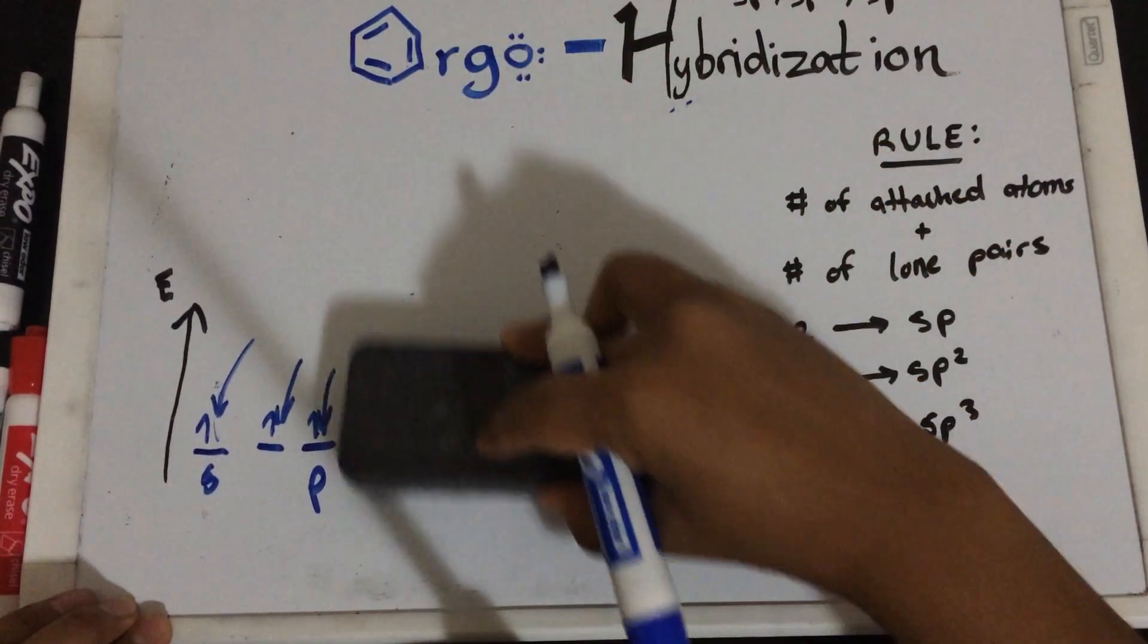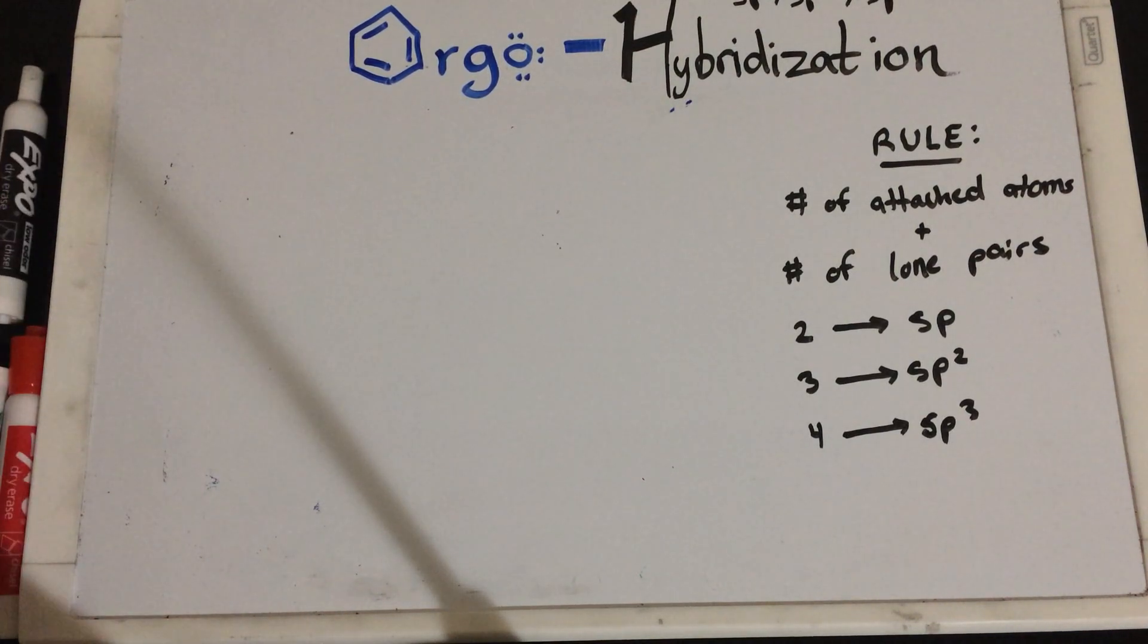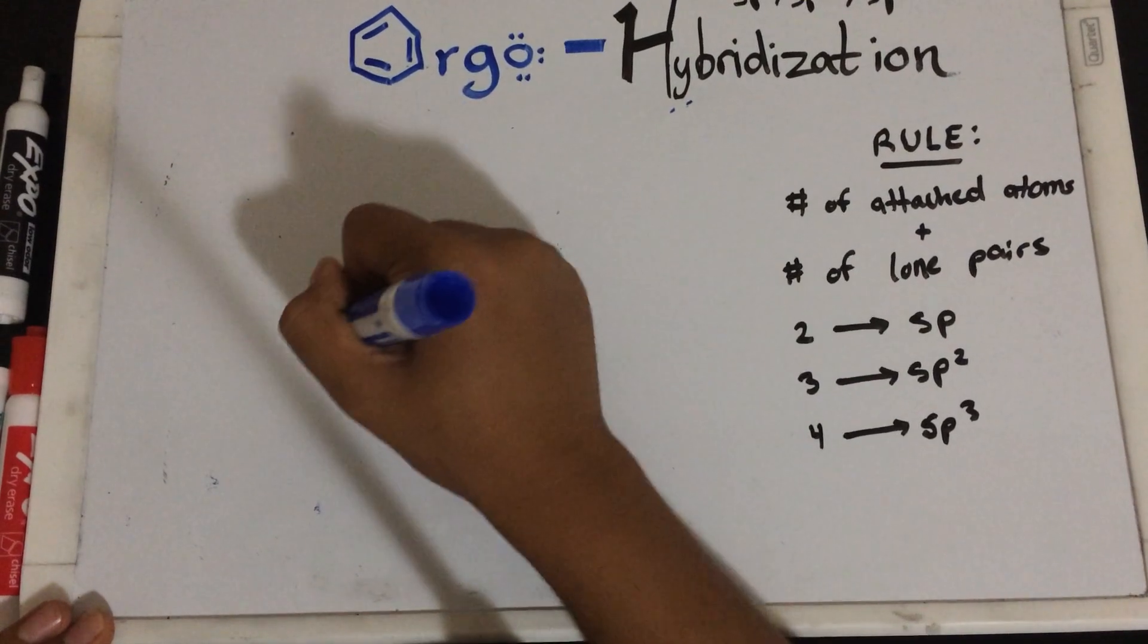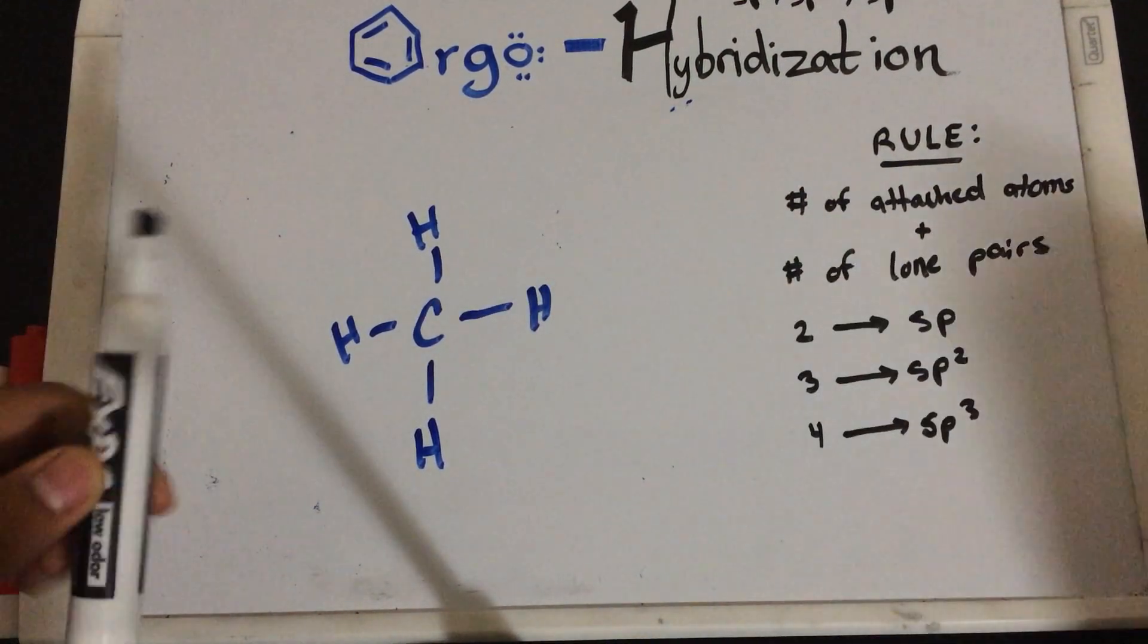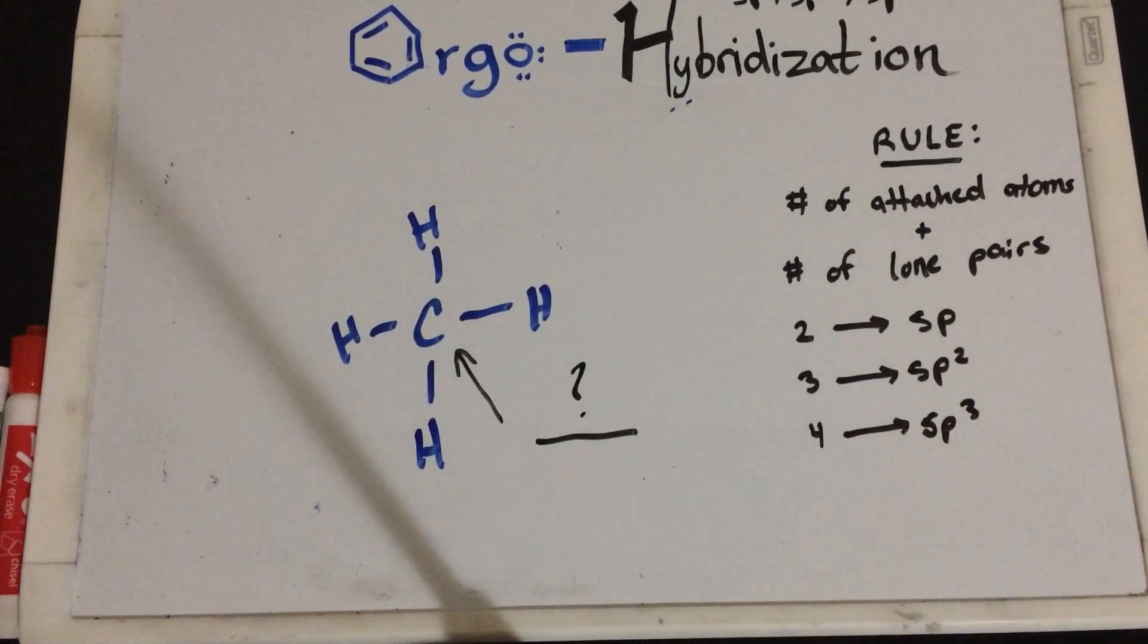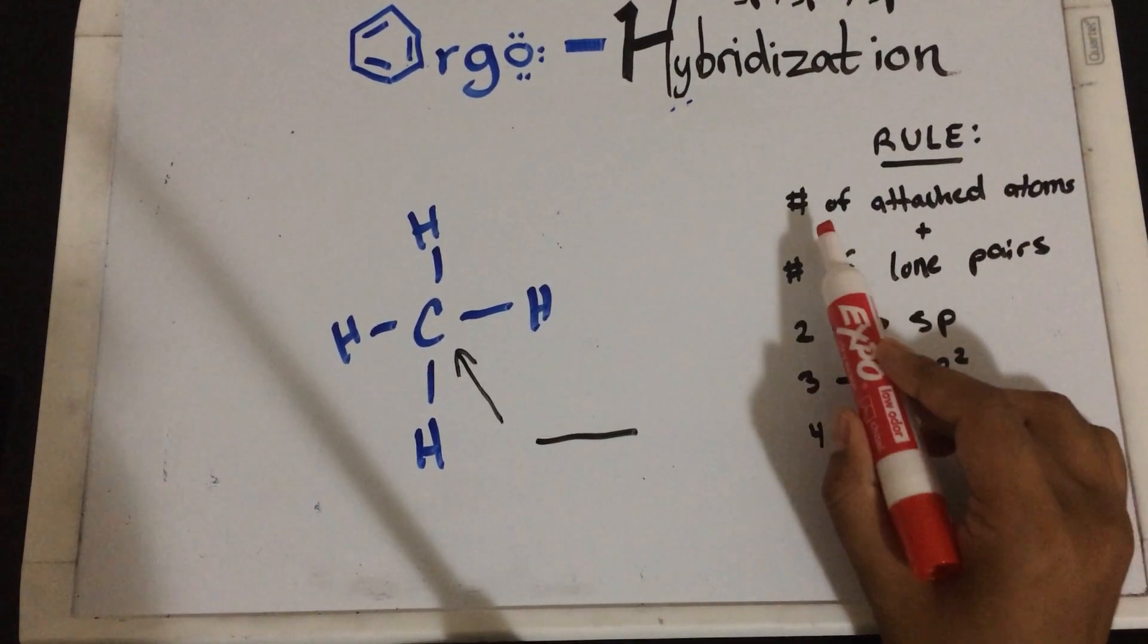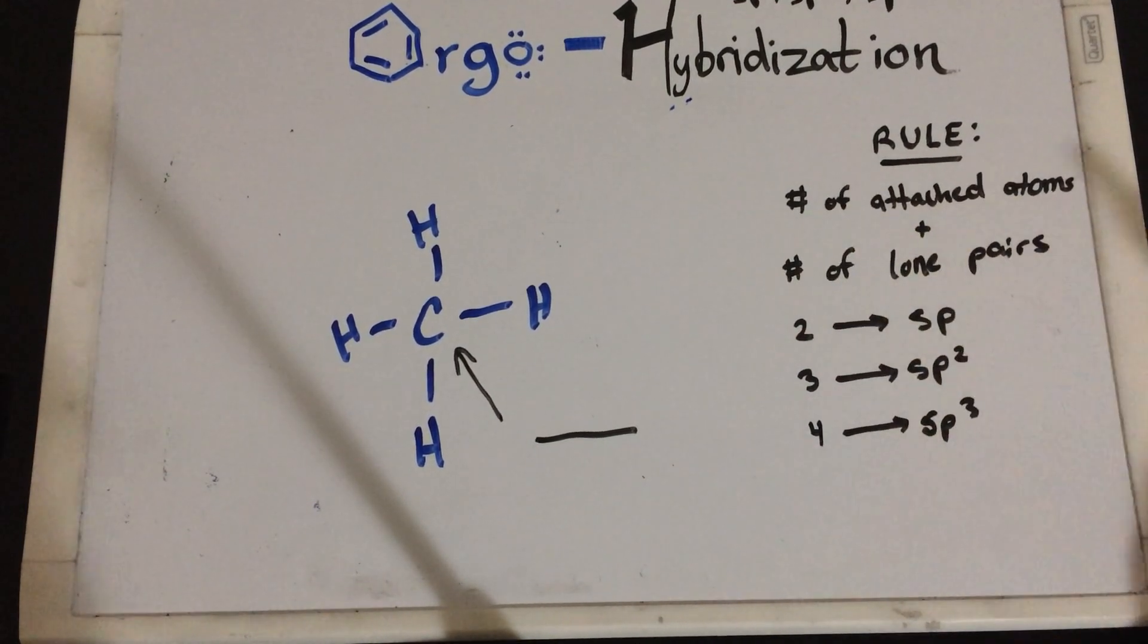There's a simple rule to hybridization, and this is the rule. Let me give you an example of SP3 hybridization. You have carbon, CH4, which is methane. Now, the questions that you'll see on your exam is, for a certain atom, say this carbon, what is the hybridization? The simple rule that I've written is how to go about telling what hybridization is. You look at the number of attached atoms, plus the number of lone pairs.